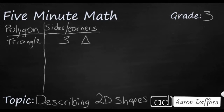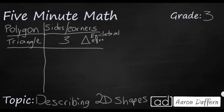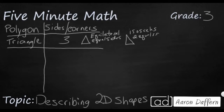Before we move on, let's spend a moment on triangles because we can actually describe triangles three different ways. This triangle I drew right here is what we call an equilateral triangle — you can see the word 'equal' in there. It describes it by its side lengths, meaning it has equal sides. If I were to draw a triangle like this, I could call that an isosceles triangle. Isosceles means it has two equal sides, while the equilateral has all three equal sides.